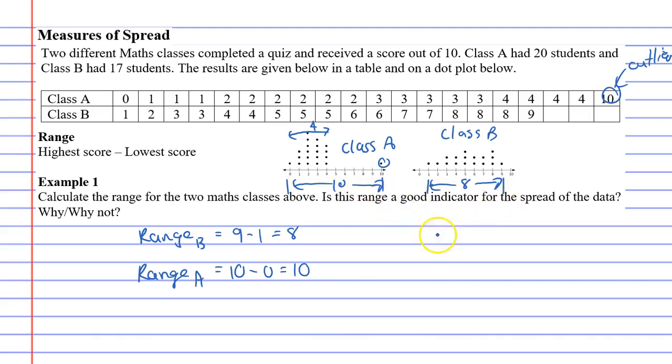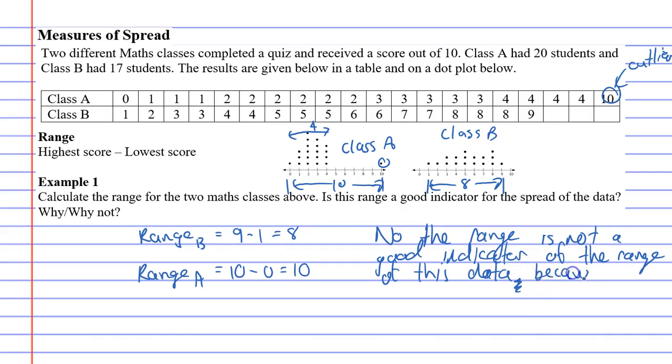So when it said, is this a good indicator for the spread of the data, the answer is no. We'll say no, the range is not a good indicator of the range of this data. And it asks why. We'll say why. Because the outlier skews the result for class A.